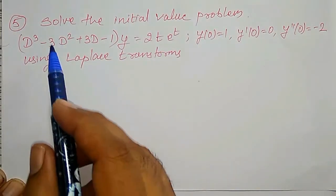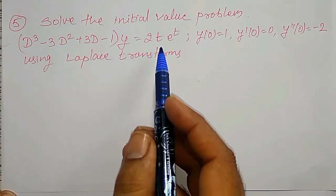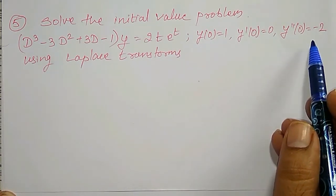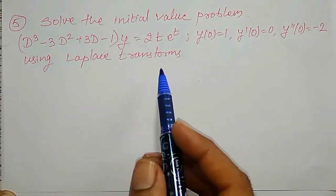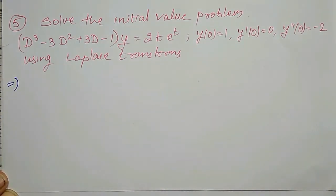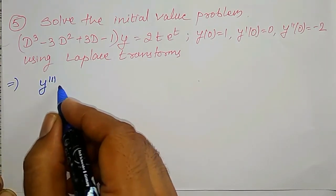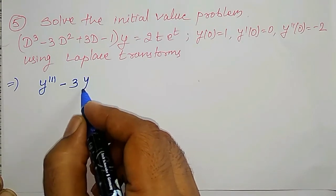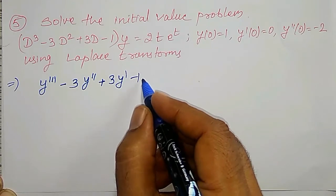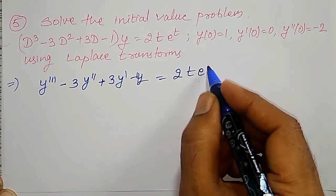Solve the initial value problem: (D³ − 3D² + 3D − 1)y = 2t·e^t, with y(0) = 1, y'(0) = 0, y''(0) = −2, using the Laplace Transform. The equation in derivative notation is: y''' − 3y'' + 3y' − y = 2t·e^t.